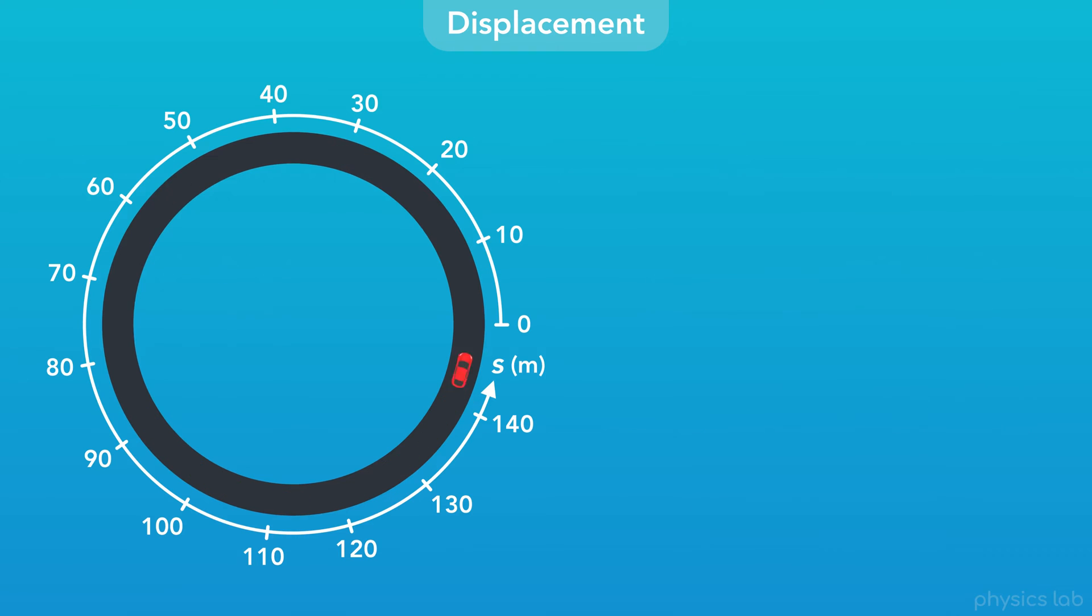Like with linear motion, the odometer in the car would show us our displacement along the circular road. The odometer doesn't know whether we're driving on a straight road or a curved road.